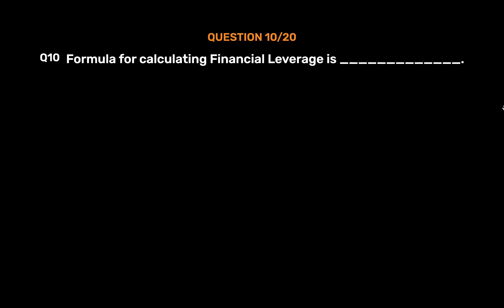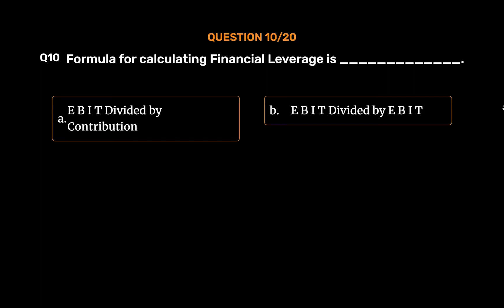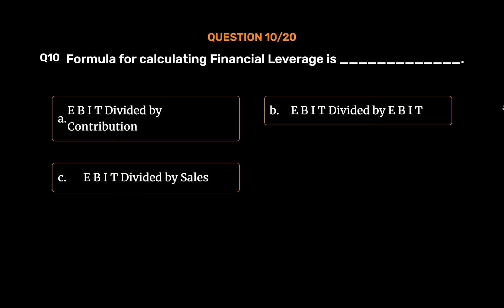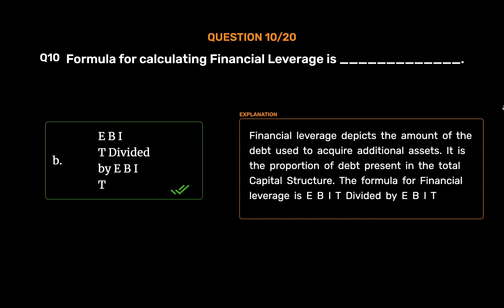Question number 10. The formula for calculating financial leverage is: Option A: EBIT divided by contribution. Option B: EBIT divided by EBT. Option C: EBIT divided by sales. Option D: EBIT divided by variable cost. The correct answer is Option B: EBIT divided by EBT. Financial leverage depicts the amount of debt used to acquire additional assets and represents the proportion of debt in the total capital structure.